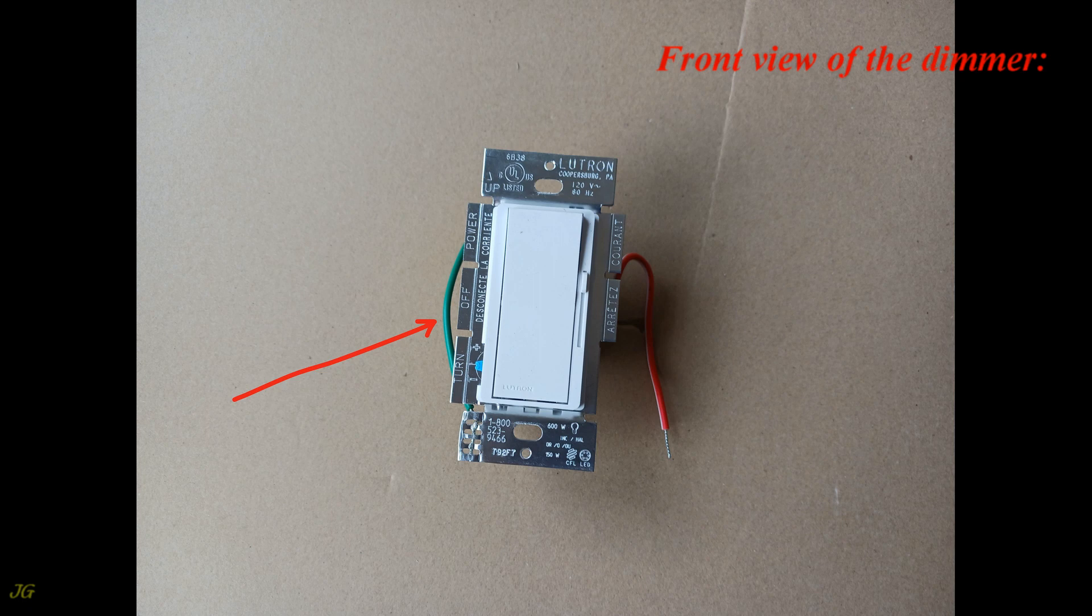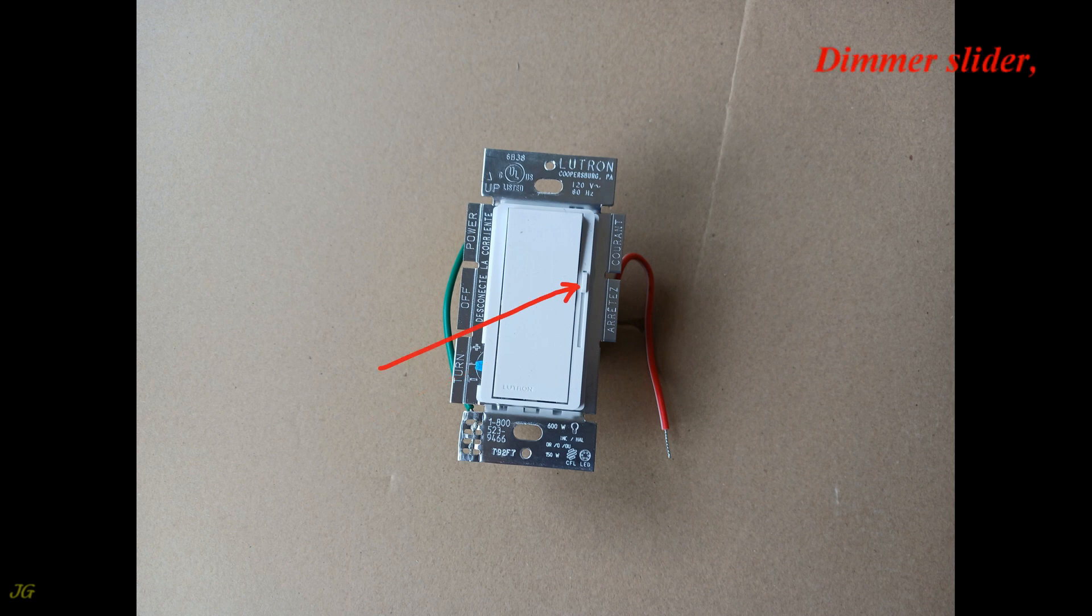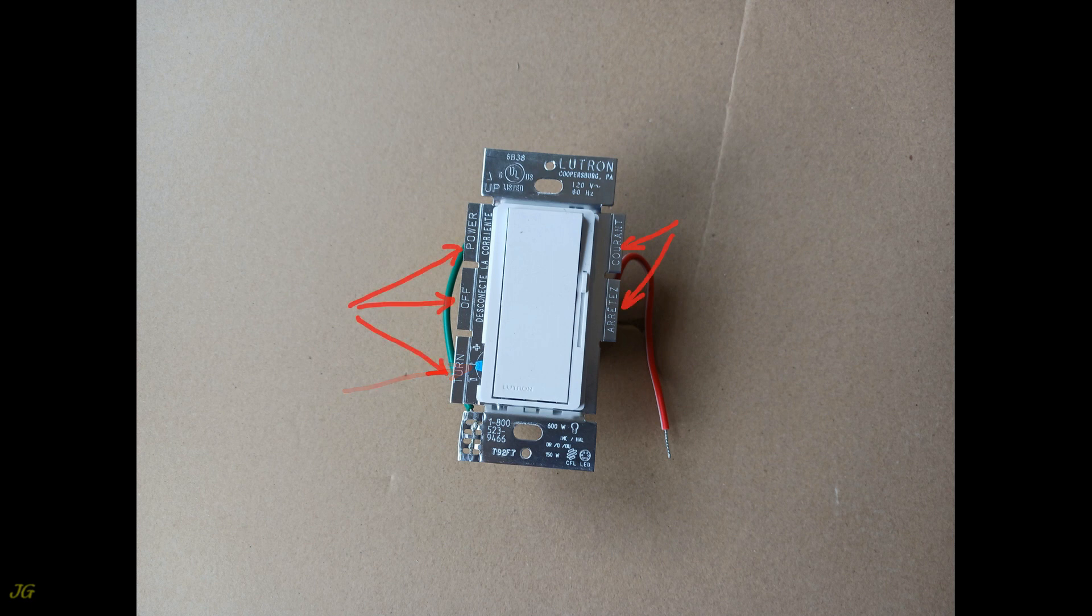Front view of the dimmer: rocker switch, dimmer slider, adjustment lever, side sections to be removed in a multi-gang installation, holes for mounting screws, and wall plate screw holes.